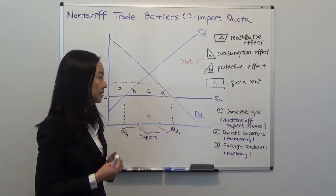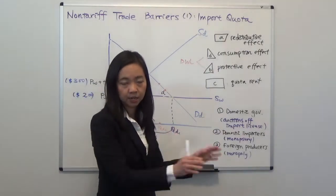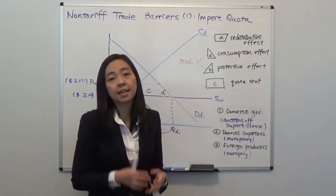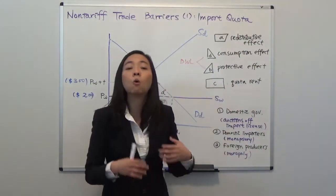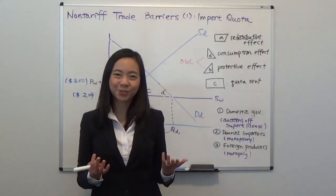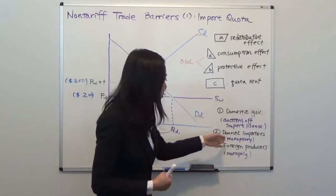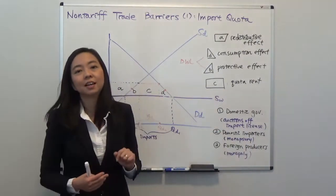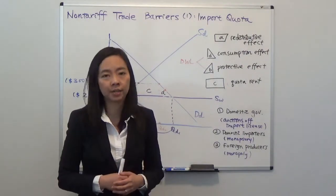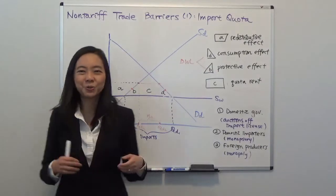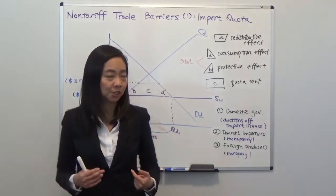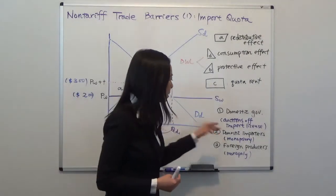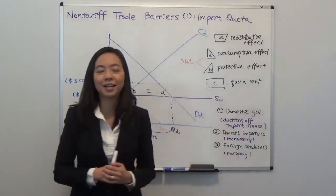And the second case is that suppose the government doesn't do anything and lets the market run itself. And at the same time, domestic importers, the grocers, they collude together as a monopsony, as an only buyer. Whereas the European cheese producers, they compete against each other trying to sell to domestic importers, to the US grocers. Then in that case, you can imagine the US grocers are going to get the quota rent. They're going to buy the cheese at $2 per pound from the European producers and sell the cheese at $3 to the US consumers. So in that case, the domestic importers, the grocers are going to get the quota rent.